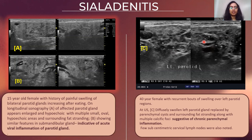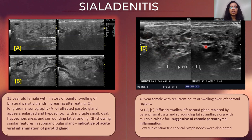Here we have a 40-year-old female with recurrent bouts of swelling over the left parotid region. Image C shows a diffusely swollen parotid gland with parenchymal cysts and surrounding fat showing multiple calcific foci within. This was suggestive of chronic parenchymal inflammation.